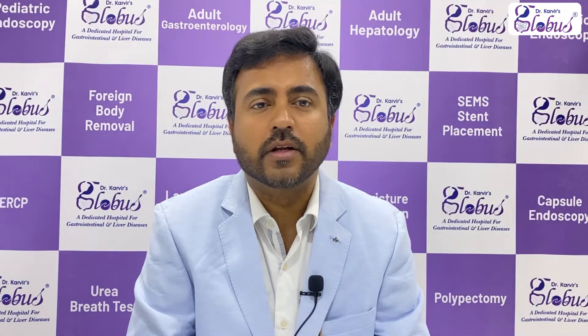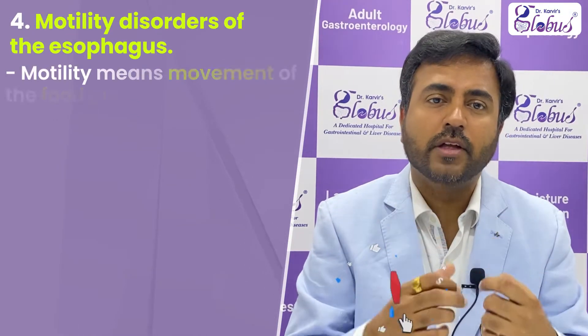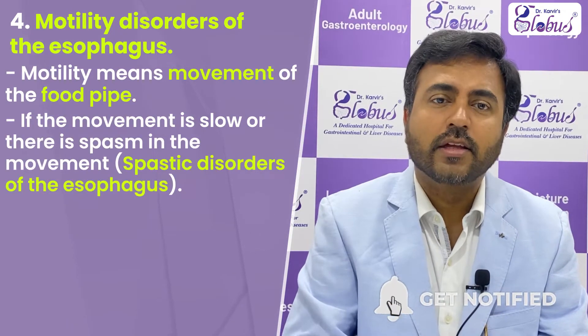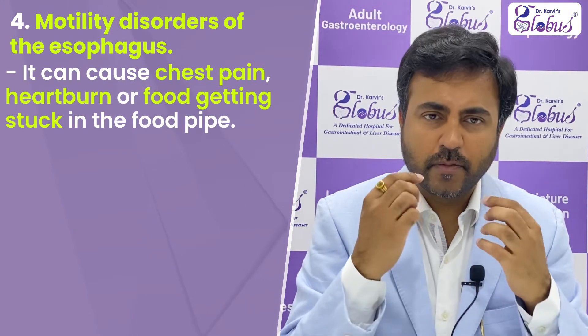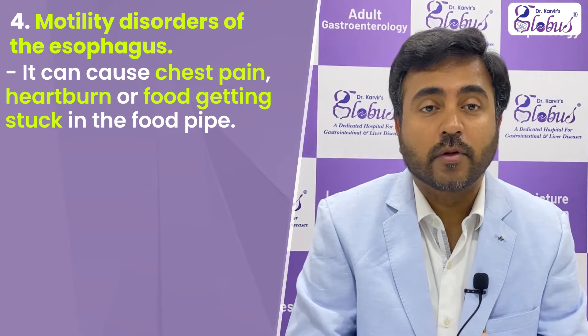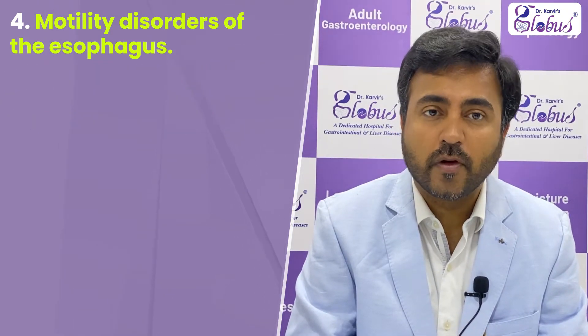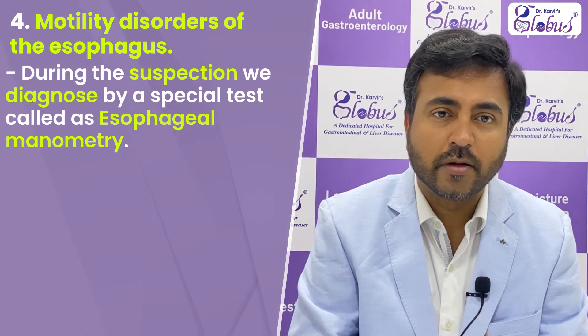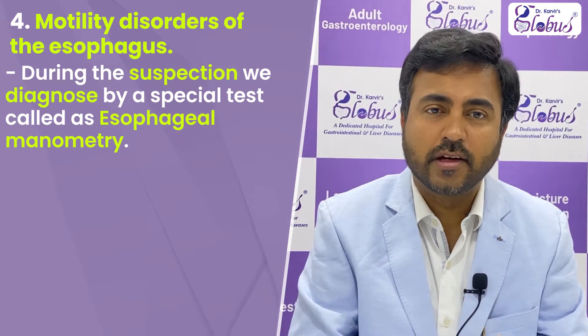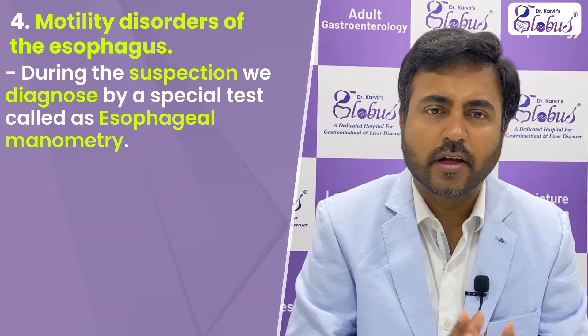Moving to the fourth condition: many times we do endoscopy and it turns out to be normal. This is called motility disorders of the esophagus. Motility means the movement of the food pipe. If the movement is not right — it is slow, or there are spasms, called spastic disorders of the esophagus — you can have heartburn or difficulty swallowing. When endoscopy is normal, we diagnose it using a special test called esophageal manometry, and we can treat it with medication.